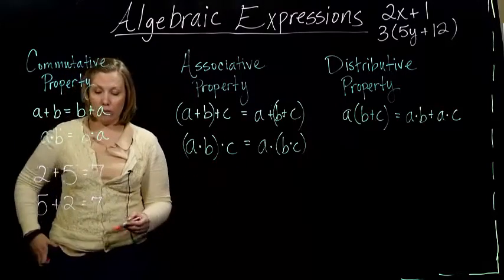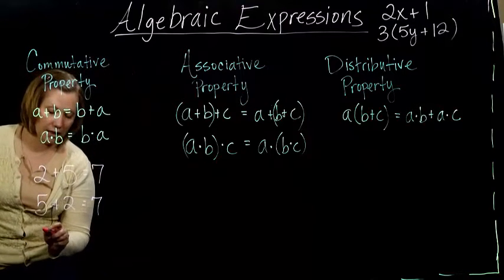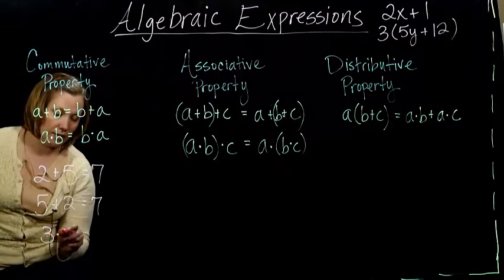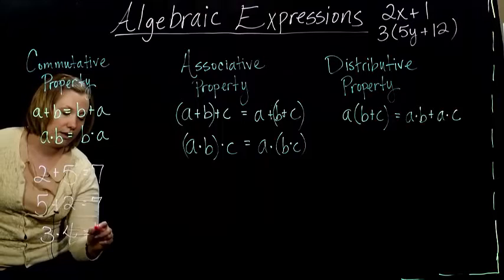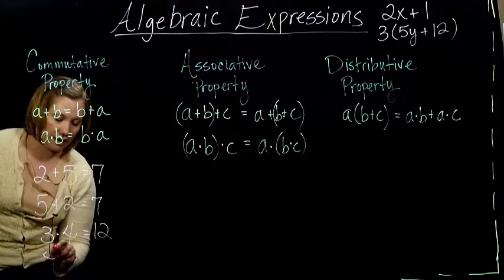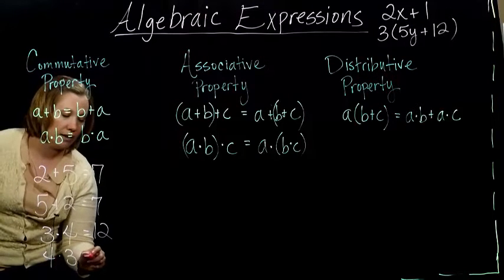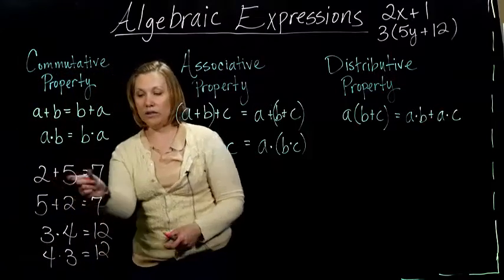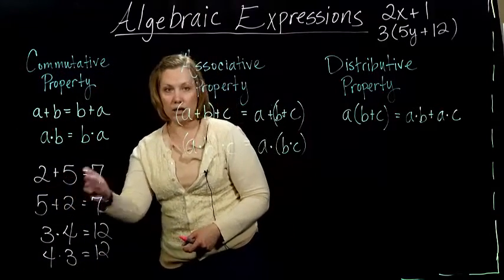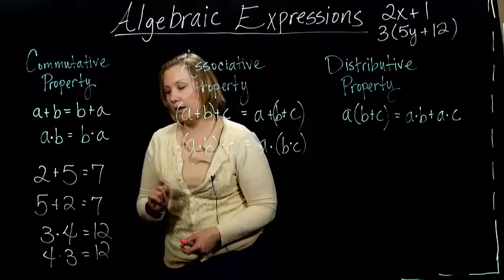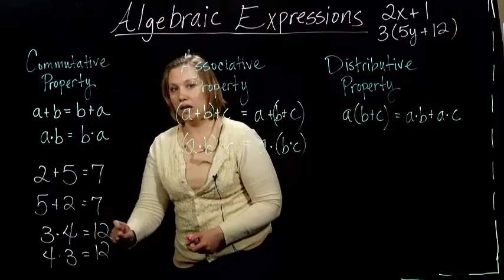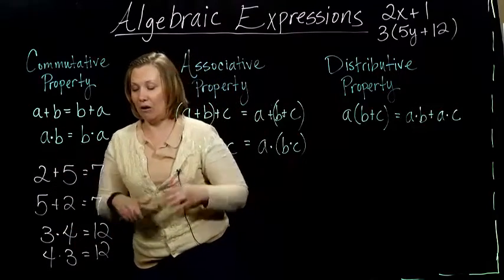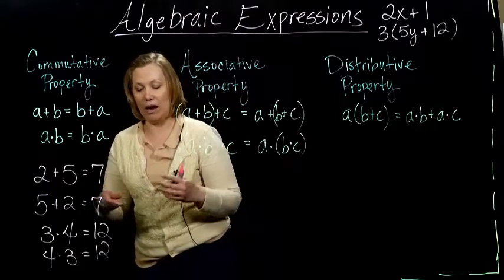We can do the same thing with multiplication. So if we did 3 times 4, we get 12. And again, if we do 4 times 3, we also get 12. So if you've got all addition, it doesn't matter what order we add in. If you've got all multiplication, it also doesn't matter what order we multiply in. We can do it however we want.